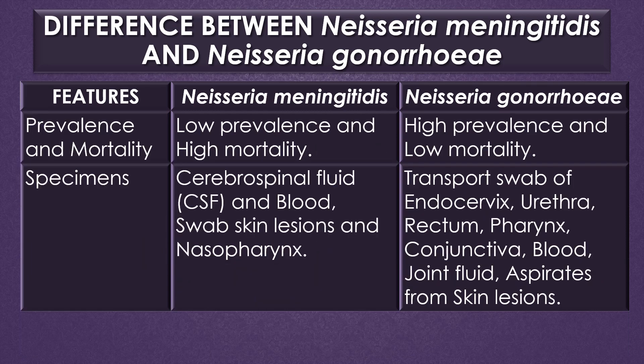Regarding prevalence and mortality, Neisseria meningitidis shows low prevalence but high mortality, while Neisseria gonorrhoeae shows high prevalence and low mortality. Recommended specimens for diagnosing meningitidis are cerebrospinal fluid, blood, swab, and nasopharyngeal cannulation. Specimens recommended for diagnosing gonorrhoeae infection include transport swab of endocervix, urethra, rectum, pharynx, conjunctiva, blood, joint fluid, and aspirates from skin lesions.